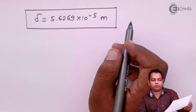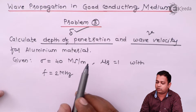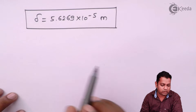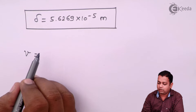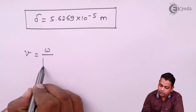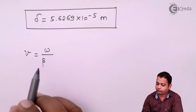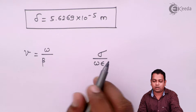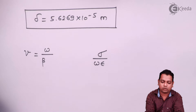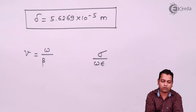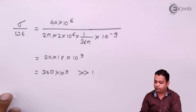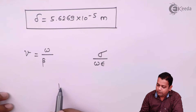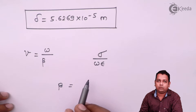With the depth of penetration for aluminium covered, we now focus on obtaining the wave velocity. The formula for velocity is v equals omega upon beta. The loss tangent sigma upon omega epsilon was already calculated as 360 into 10 to the power 9, which is very, very high. Therefore, the good conducting medium formula for beta also applies, and for a good conductor alpha and beta have the same formula.